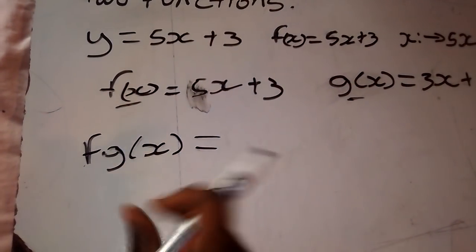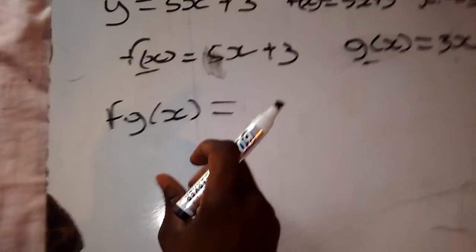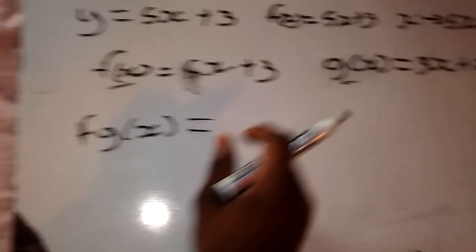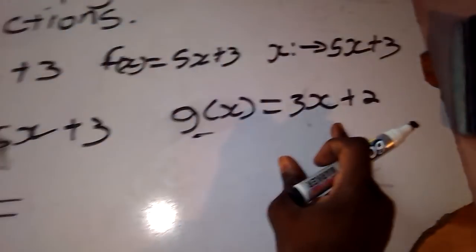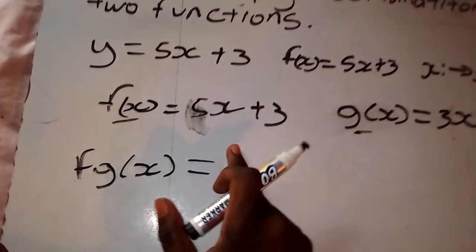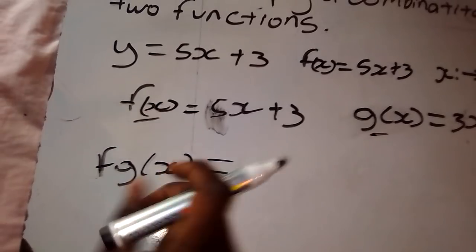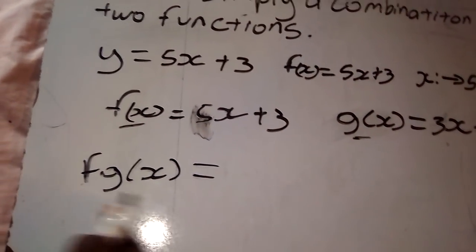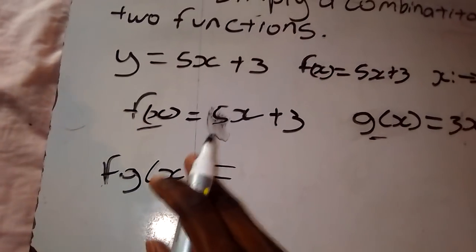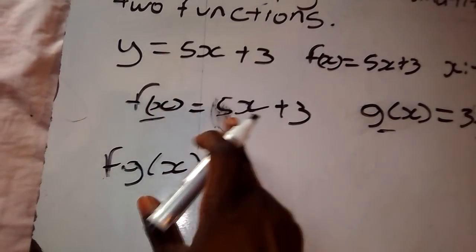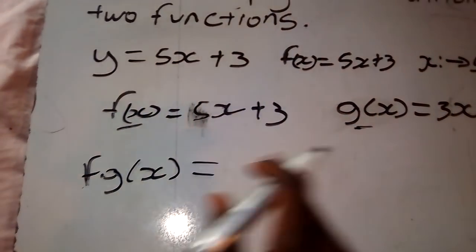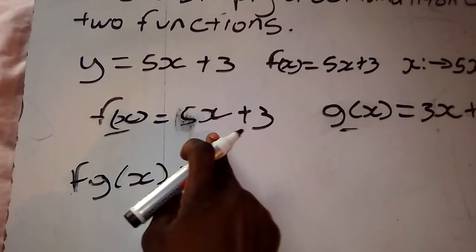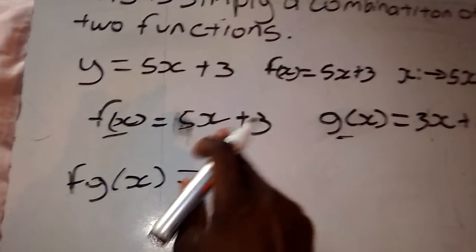So f of g of x means you put g of x into f. We know g(x) = 3x + 2 and f(x) = 5x + 3. To compute f(g(x)), you write the function f first, and wherever there is an x in f, you substitute the entire function g of x in its place.